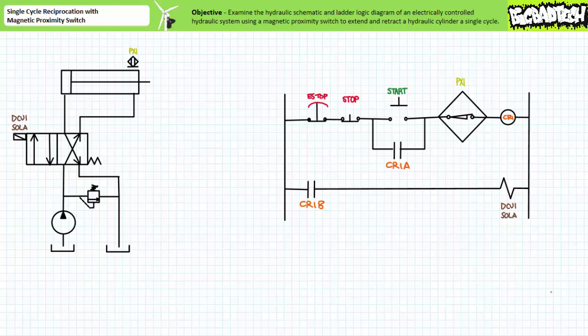The goal of this system is to use a manually activated push button to initiate the single cycle reciprocation action. At the limits of travel the cylinder will automatically retract. Such a system could be used to perform some industrial tasks like punching or bending a workpiece.